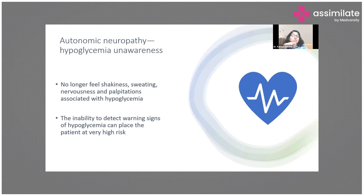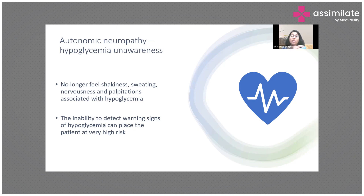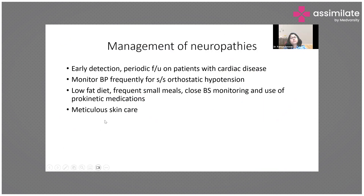Hypoglycemia unawareness is an important consequence of autonomic neuropathy. Normally, when blood sugar falls, the body produces warning symptoms like giddiness, disorientation, sweating, and nervousness. In patients with autonomic neuropathy, these autonomic warning signs are absent, so the patient does not realize their sugar has dropped. This places them at very high risk of undetected severe hypoglycemia, which can result in brain damage.